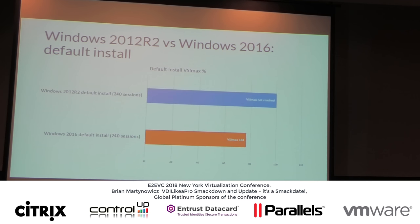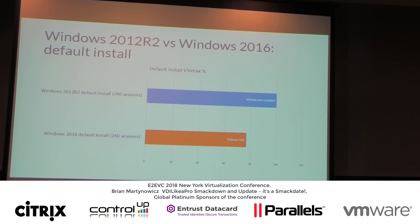Looking at Server 2012 R2 versus 2016 default installation: in the 2012 example we have 240 sessions running against our testbed on one ESX host. In 2016, running the same 240 sessions, we're maxing out at around 184. So the impact of going from Windows Server 2012 to 2016 is about 15%, more or less.